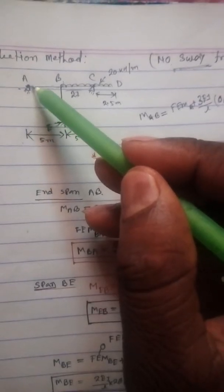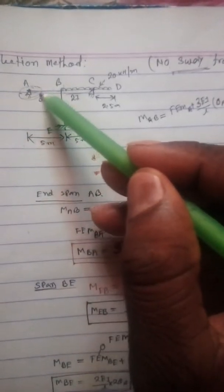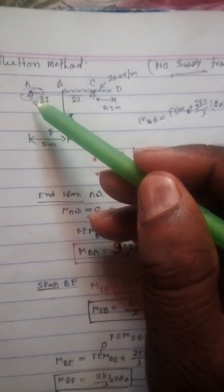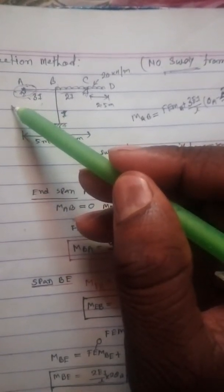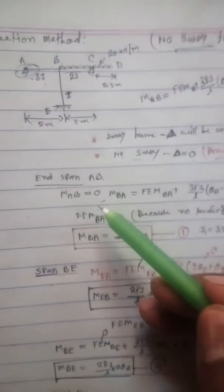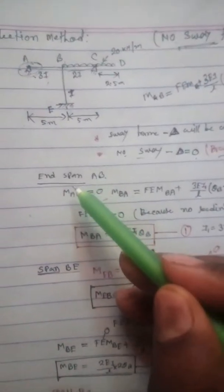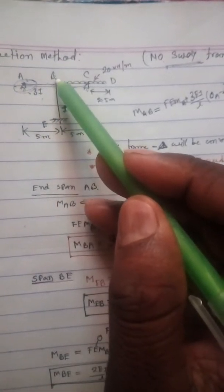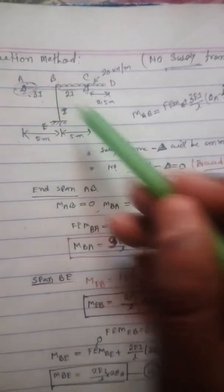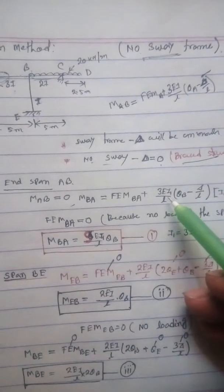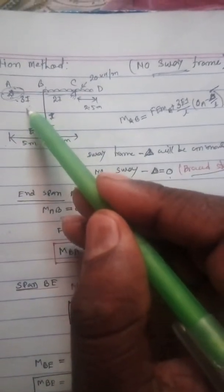First, for span AB: span AB is an end span. For an end span, M_AB equals zero — I discussed this in my previous lecture, so I won't repeat it here. Therefore, for span AB, M_AB equals zero.